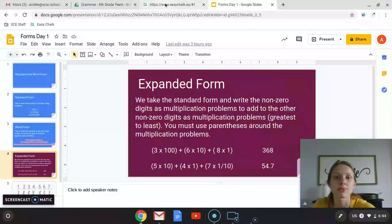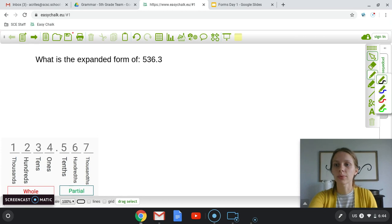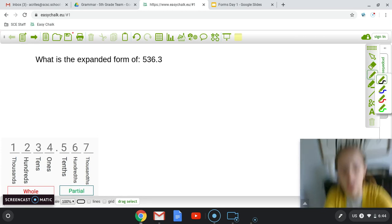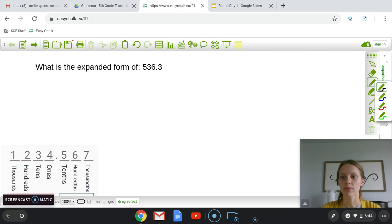So let's see if we can go practice this real quick. If you want to get a piece of paper out, you can. Pause the video if you need to, and then check your answer. So we're going to start with... First, I'm going to change up my camera. Here we go. So first, we've got what is the expanded form of 536 and 3 tenths.